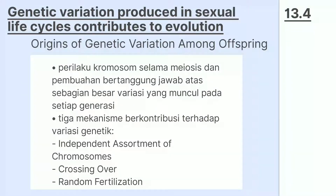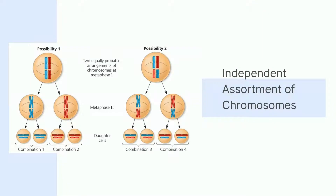Selanjutnya kita akan membahas asal-usul variasi genetik di antara keturunan. Perilaku kromosom selama meiosis dan pembuahan bertanggung jawab atas sebagian besar variasi yang muncul pada setiap generasi. Tiga mekanisme yang berkontribusi terhadap variasi genetik yaitu independent assortment of kromosom, crossing over, dan random fertilization. Pada independent assortment, pasangan homolog kromosom berorientasi secara acak pada metafase I. Setiap pasang kromosom memilih homolog ibu dan ayah ke sel anak secara terpisah. Jumlah kombinasi yang dimungkinkan adalah 2^N dengan N adalah angka haploid. Untuk manusia terdapat lebih dari 8 juta kombinasi kromosom yang mungkin terjadi.